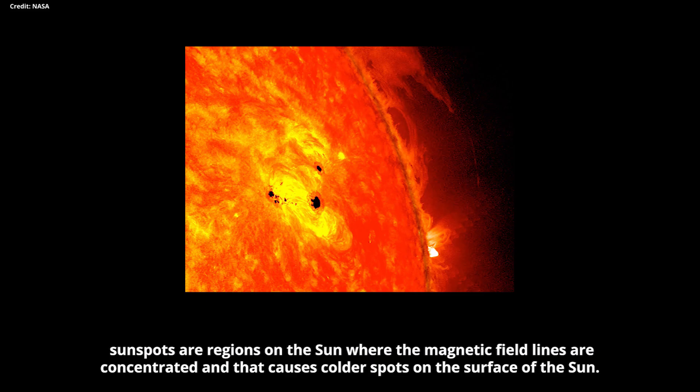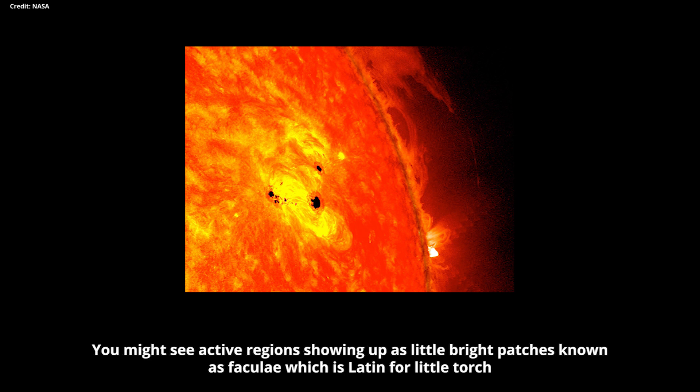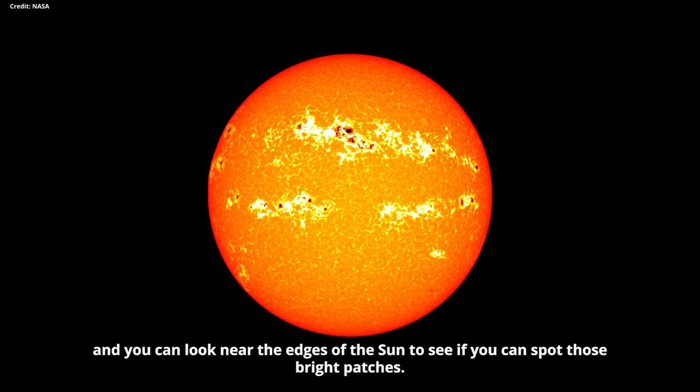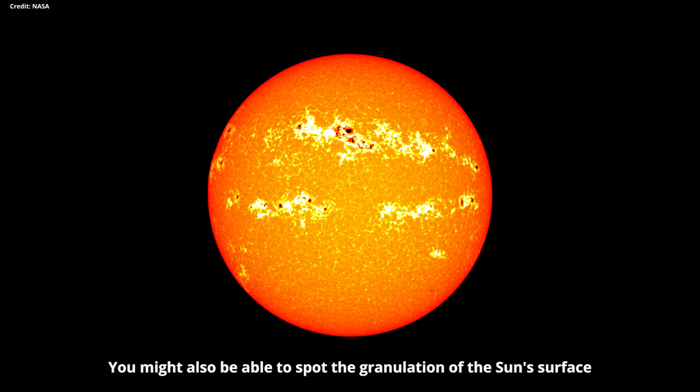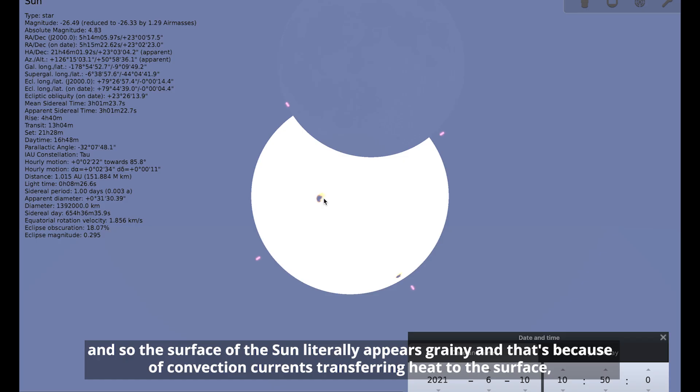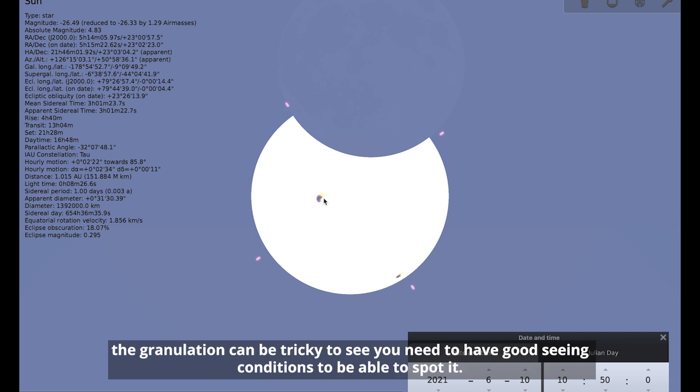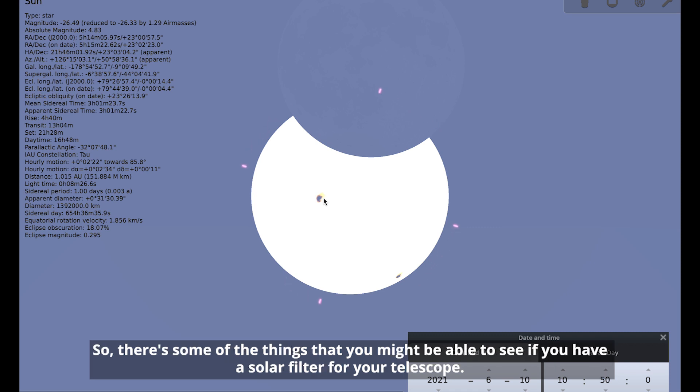Sunspots are regions on the sun where the magnetic field lines are concentrated and that causes colder spots on the surface of the sun. You might see active regions showing up as little bright patches known as faculae, which is Latin for little torch. And you can look near the edges of the sun to see if you can spot those bright patches. You might also be able to spot the granulation of the sun's surface. So the surface of the sun literally appears grainy and that's because of convection currents transferring heat to the surface. The granulation can be tricky to see. You need to have good seeing conditions to be able to spot it.